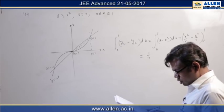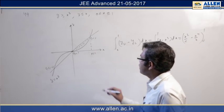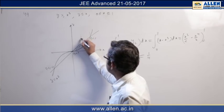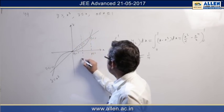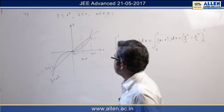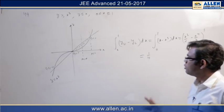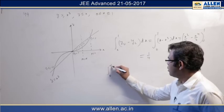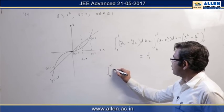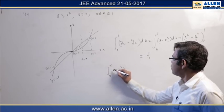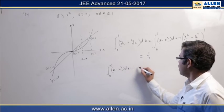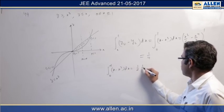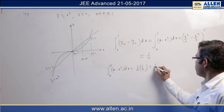Now in the problem, they are asking there is a line x = α which divides the whole region into two equal areas. So by this we can infer that the integral from 0 to α of x minus x³ dx equals half of 1/4, that is 1/8.